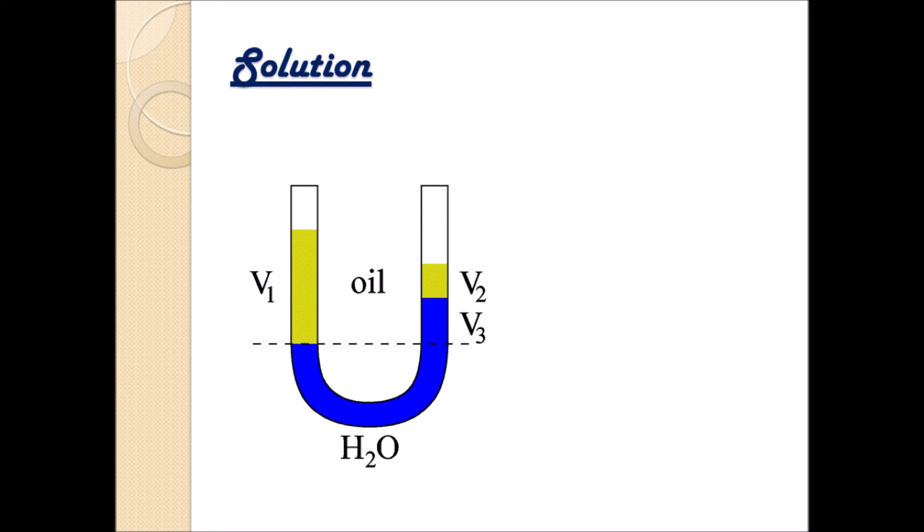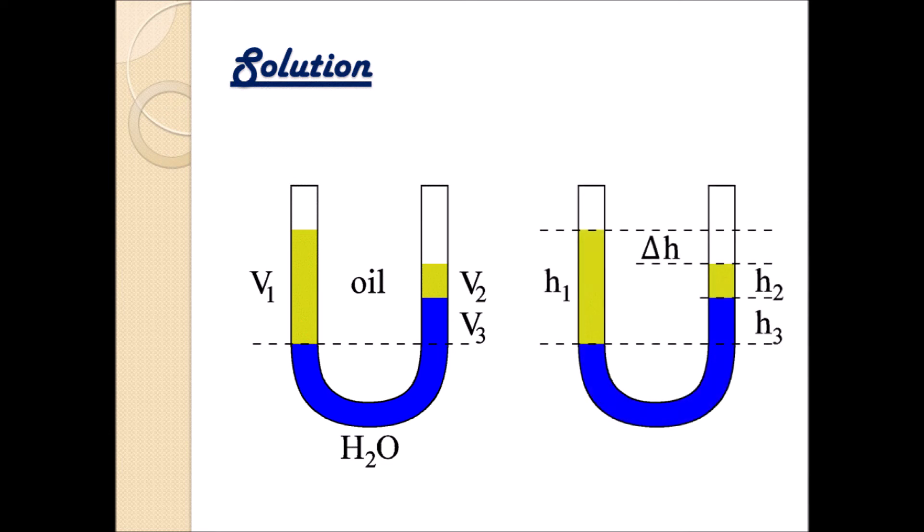And if we do this, considering that it's apparently a U-tube and we didn't give any special meaning saying that the different columns had different sizes, so we can assume reasonably that they have the same cross-sectional area. Then we can substitute the volumes by the heights. We have on the left-hand side the height h1, and on the right-hand side h2 for the oil, h3 for the water, and we see even the height difference that we haven't been using yet.